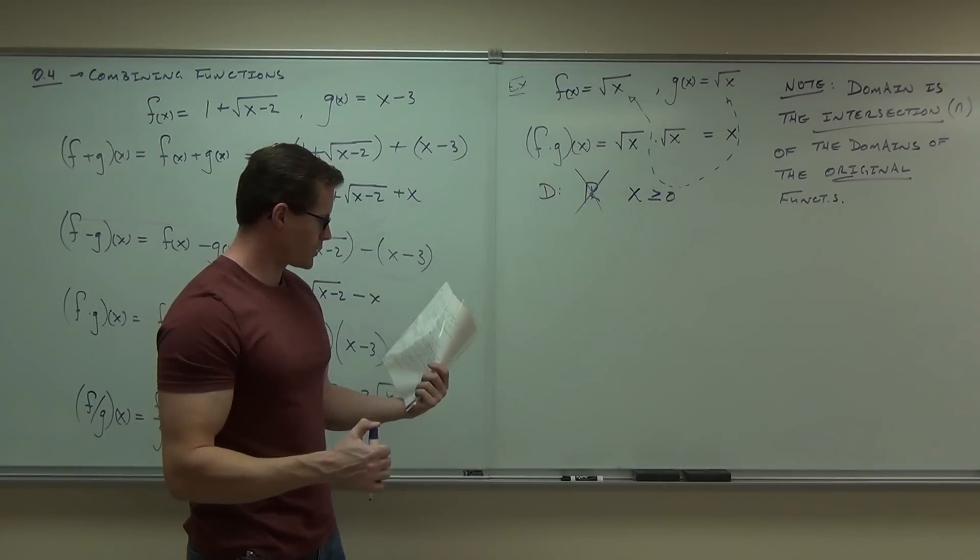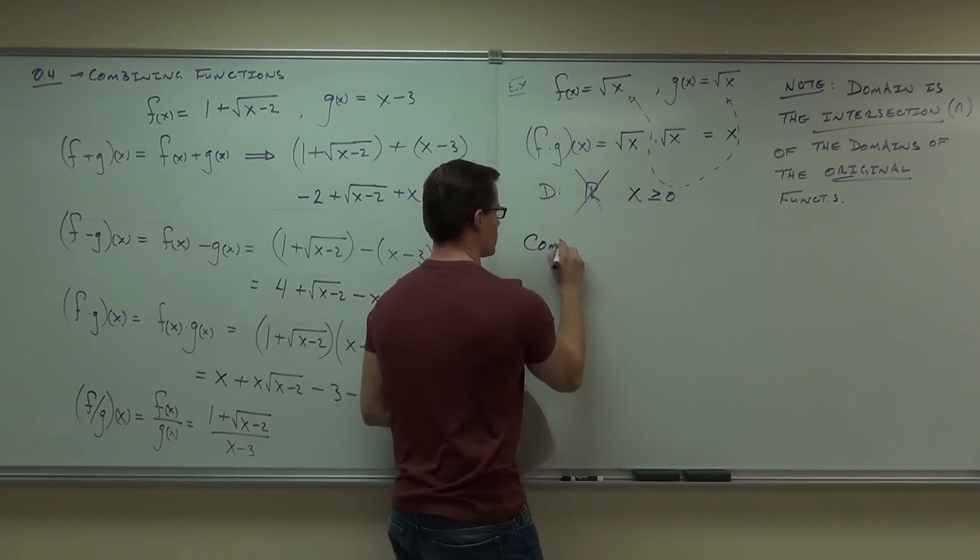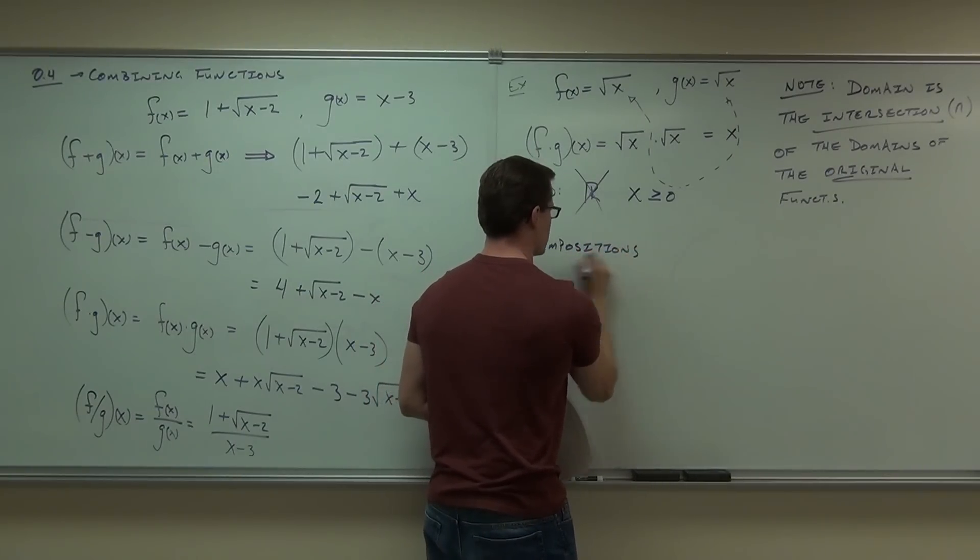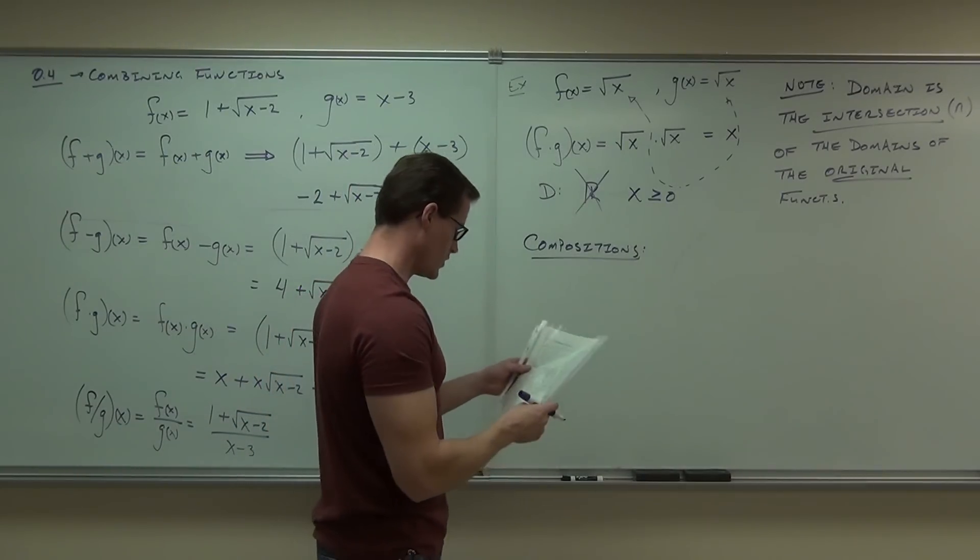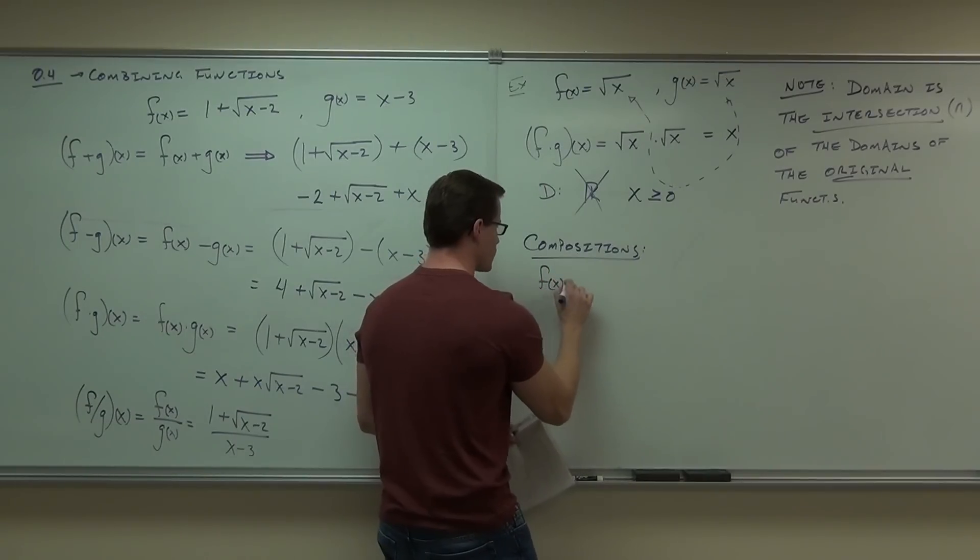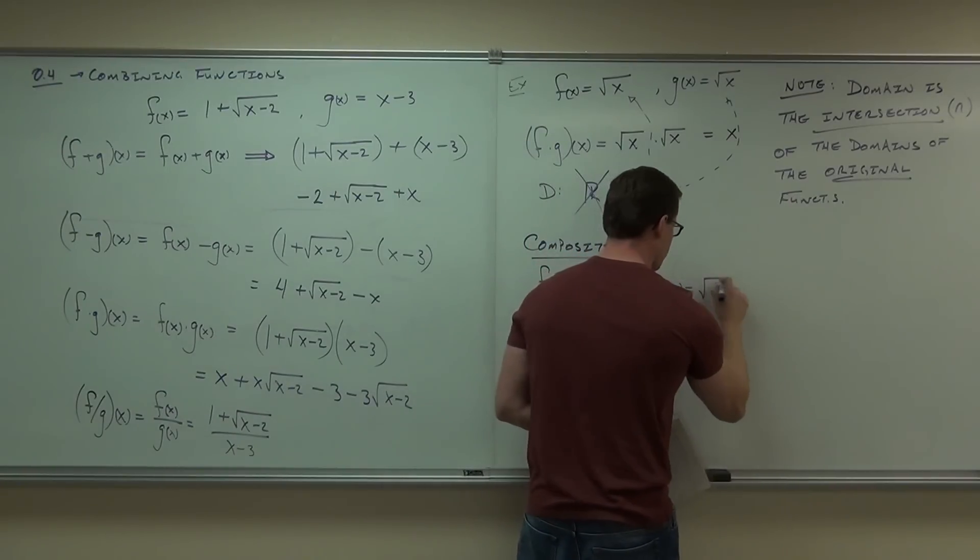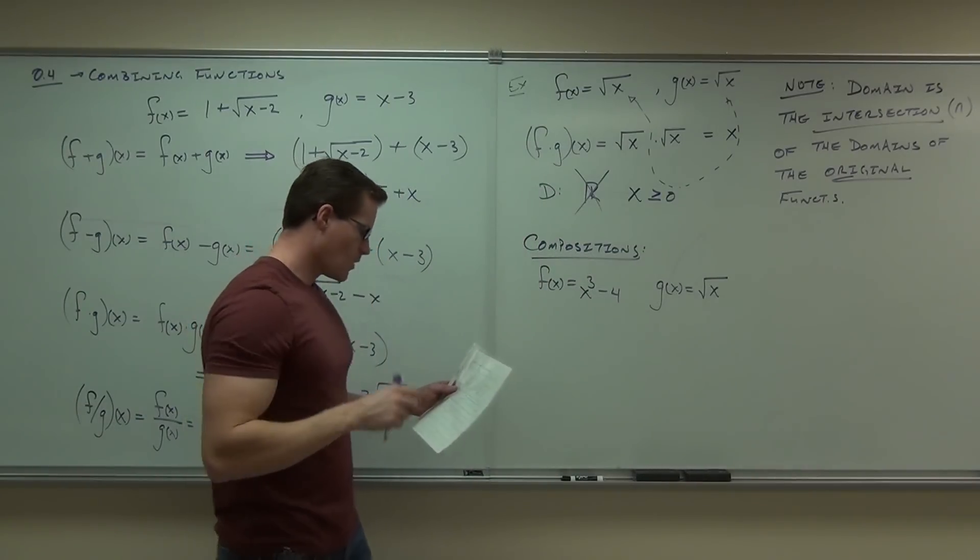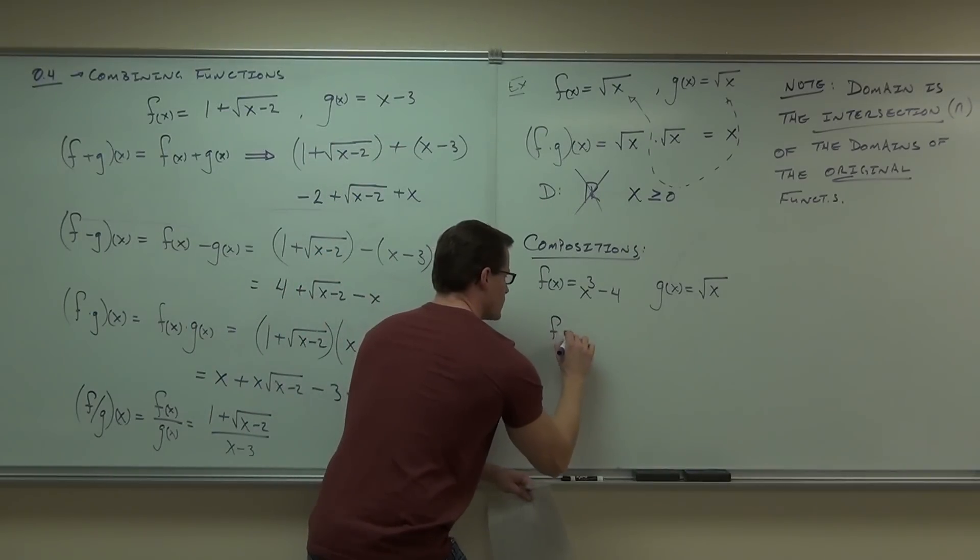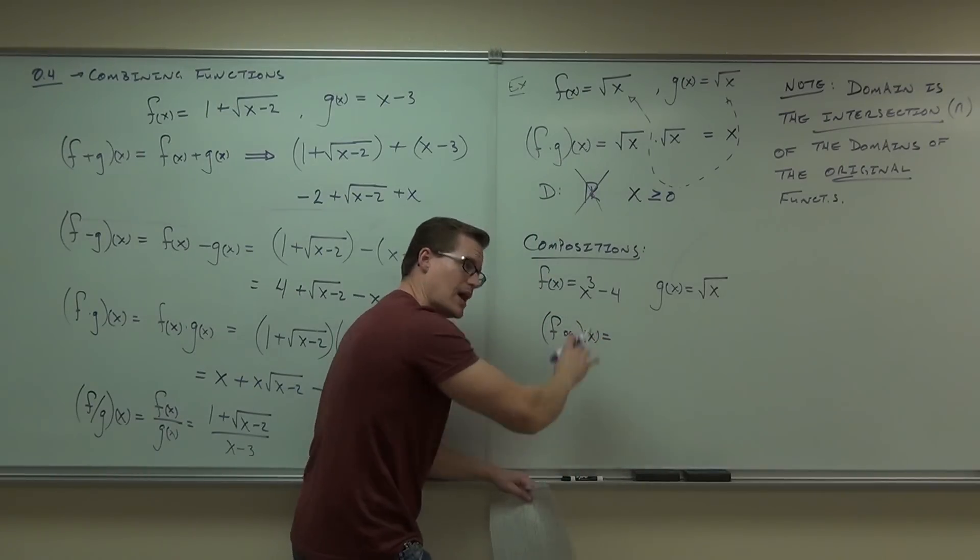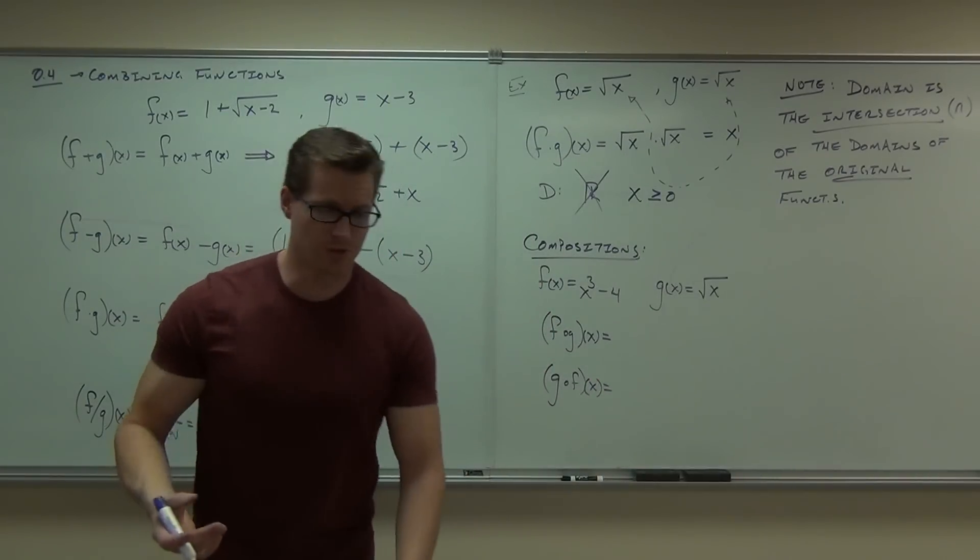All right. The last thing we're going to talk about, we can also compose functions. This will be the last thing that we do. Just make sure that you know how to do compositions. I'll go really quickly through this. This is an intermediate algebra concept, so I'm going to make sure that you know it. So what we mean by compositions is if I have f of x equals x to the third minus 4 and g of x is the square root of x, we're basically just substituting in one function for another. So these two things, unless they're inverses, will have different answers. If they are inverses, their answer will both be x. That's how you tell whether two functions are inverses or not.